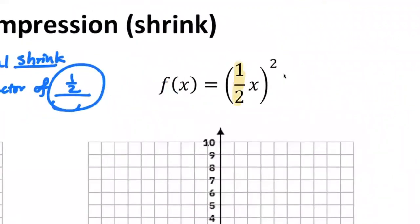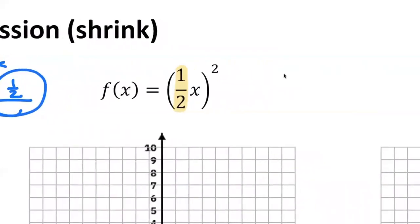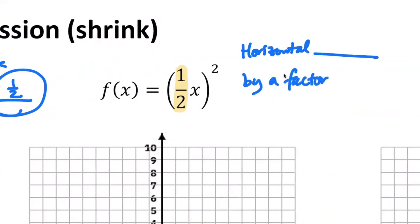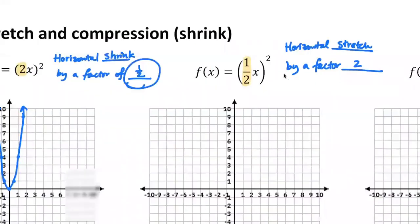Now the next example has a b value of one half. What is the interpretation of this transformation? It is a horizontal — I'll leave it blank so you can figure it out first — by a factor of how many? It will be by a factor of two, because it's the reciprocal, and because it's a two, it's a horizontal stretch.